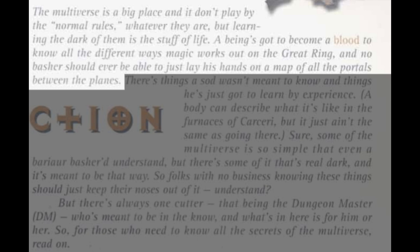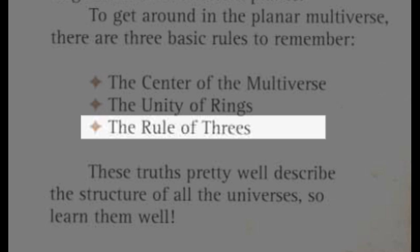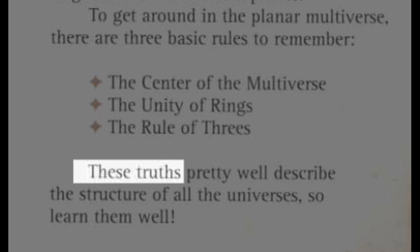A being's got to become a blood to know all the different ways magic works out on the Great Ring, and no basher should ever be able to just lay his hands on a map of all the portals between the planes. This is taken from the introduction to the DM's Guide to the Planes, and we'll go over some of the unusual terms like blood and basher later on in the video. The point is that the setting certainly does not play by normal rules, but David Zeb Cook, the creator of the setting, did set out three key ones in the Player's Guide to the Planes: 1. The center of the multiverse. 2. The unity of rings. 3. The rule of threes. Cook describes these as truths, and we are told to learn them well, but what exactly are they?